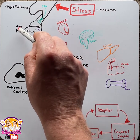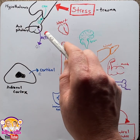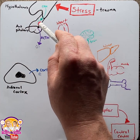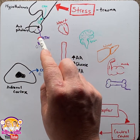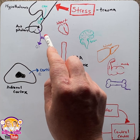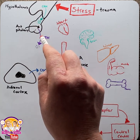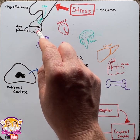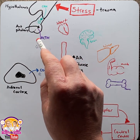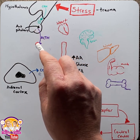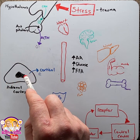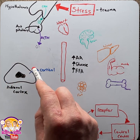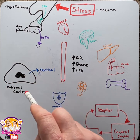This nucleus releases corticotrophin releasing hormone, which then goes down to the anterior pituitary gland, which releases another hormone known as adrenocorticotrophin hormone, or ACTH, which then travels in the systemic blood to the effector, the adrenal cortex, to release cortisol.